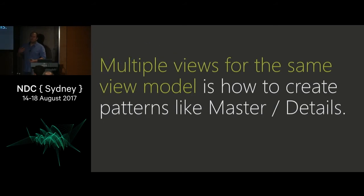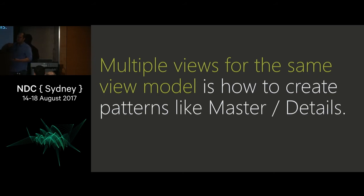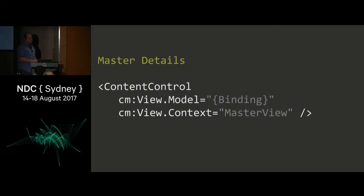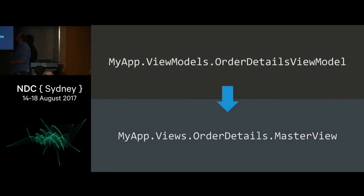We can also do this with multiple views for the same view model. The pattern we see around this is master-detail: a list on the left as the master view of the page, and once something is selected, the details view on the right. We can add context to our selection — going from an order details view model to an order details view with a master view context.